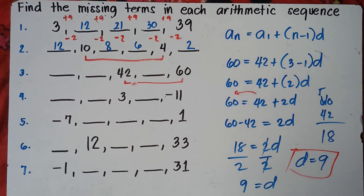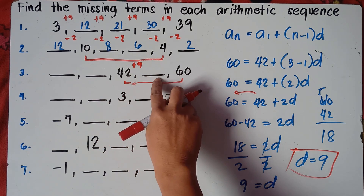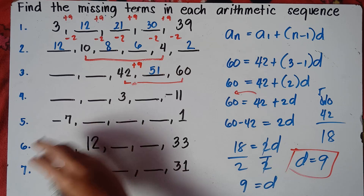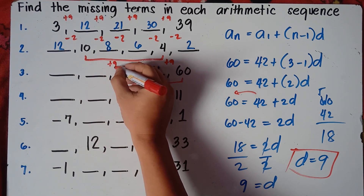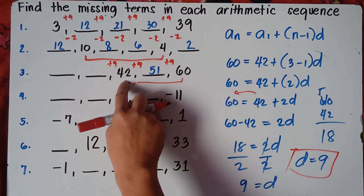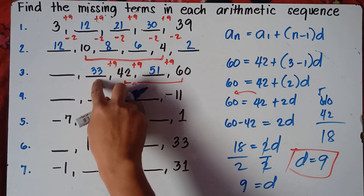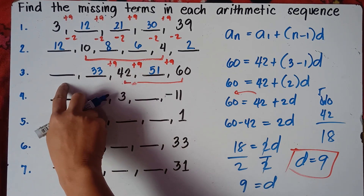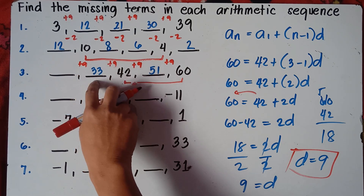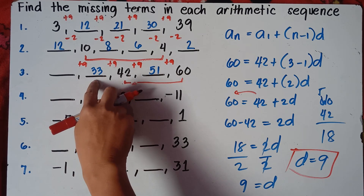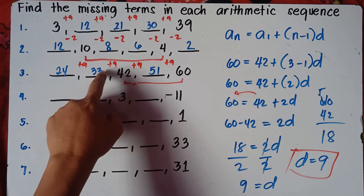Let's check: if d is 9, then 42 plus 9 is 51, and 51 plus 9 is 60 — correct! Going backwards: 42 minus 9 is 33, and 33 minus 9 is 24. So the full sequence is 24, 33, 42, 51, 60. Let's verify: 24 plus 9 is 33, 33 plus 9 is 42. Correct!